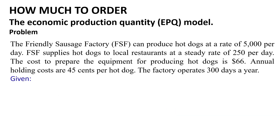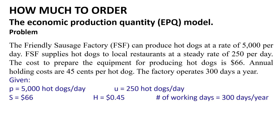Let us start by extracting the given values from the problem. The production rate P equals 5,000 hot dogs per day. The usage rate U equals 250 hot dogs per day. The setup cost S equals $66. The carrying cost H equals $0.45 per hot dog per year. The number of working days per year is 300 days.